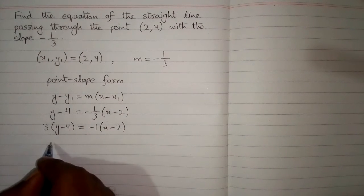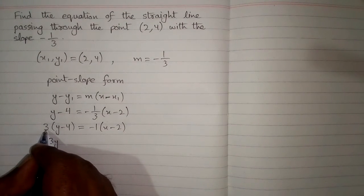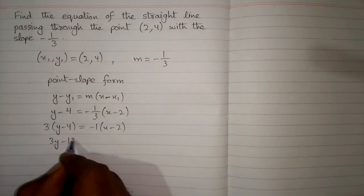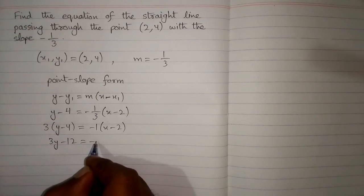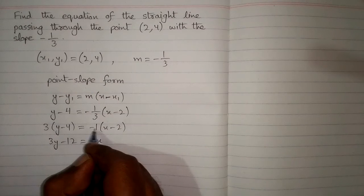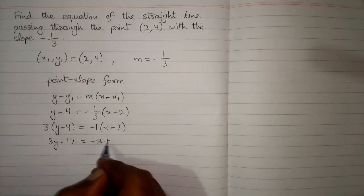Now 3 times y is 3y and 3 times minus 4 is minus 12 and minus 1 times x is minus x. Minus 1 times minus 2 is plus 2.